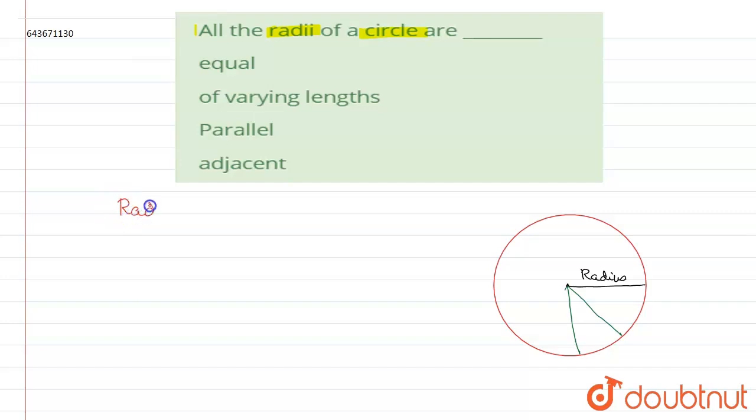radii of the circle are equal. By observing the diagram, we can say that radii of the circle are equal.